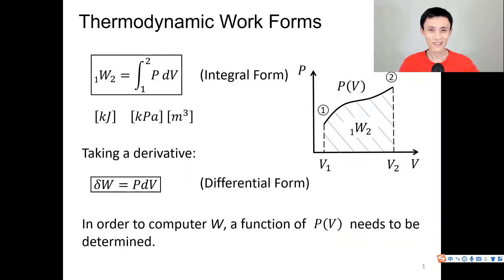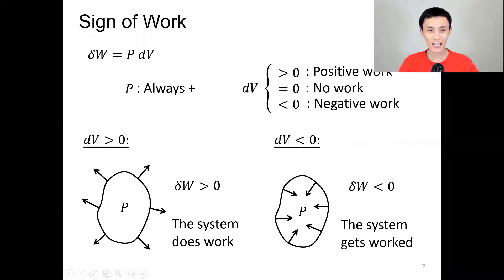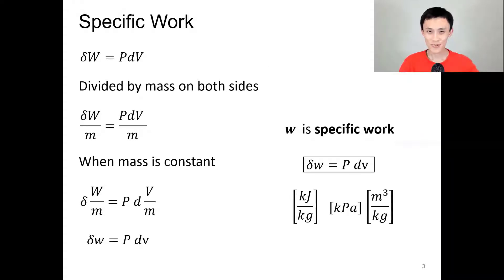Before we start, let's briefly review what we learned before. Work is the integral of p dv — we are looking for a function p with respect to v. If the volume increases, we have positive work; if the volume decreases, we have negative work; and if the volume doesn't change, then no work. We also have specific work, which is overall work divided by the mass.